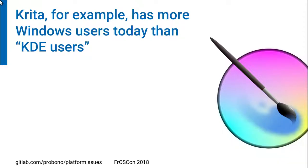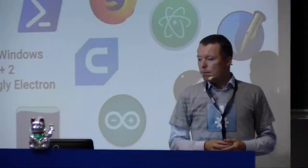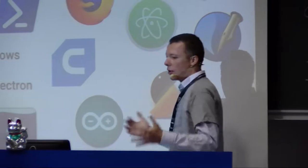Even open source applications sometimes go differently than planned. Krita started as a graphical application for the KDE desktop on Linux, predominantly addressing KDE users. But today it has more downloads for Windows by far than for any Linux system. If you look at other real-world applications, the ones I use daily are all cross-platform — available on Windows, Mac, and Linux. Famous names: Firefox, OpenOffice, Arduino, Scribus, Electron. These applications are mostly written in cross-platform toolkits like Qt, WX Windows, or GTK. Increasingly we see more Electron apps, which shows there's a real need for something that unifies Windows, Mac, and Linux.